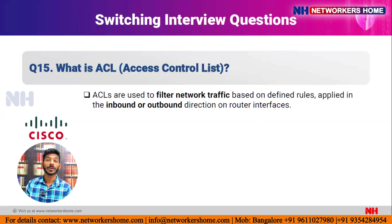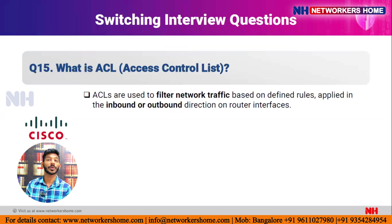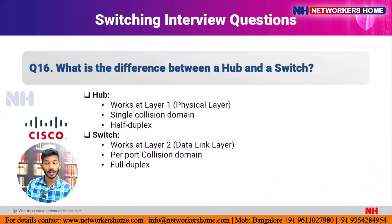Question fifteen: what is an Access Control List (ACL)? ACL is used to filter network traffic on a router's interface in either inbound or outbound direction, based on defined rules. There are implicit rules (predefined, cannot be modified) and explicit rules (user-defined, can be modified). ACLs can filter based on host, subnet, network, protocol, port number, or specific services, and are applied on the router's interface.